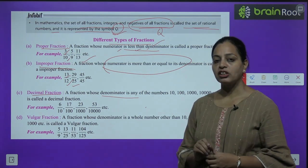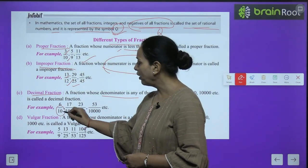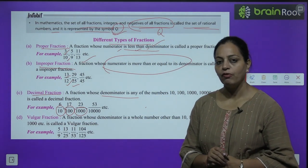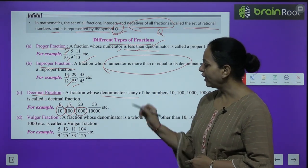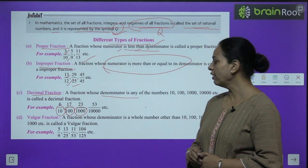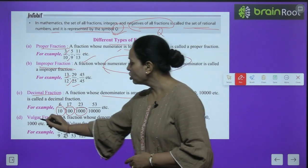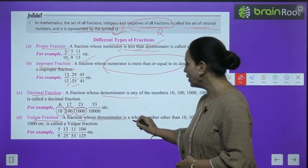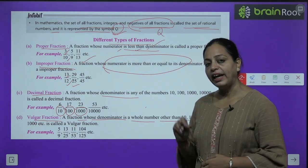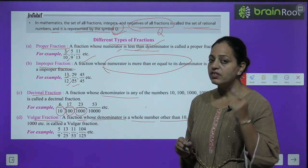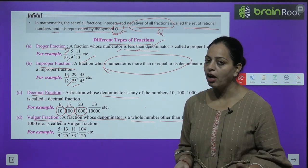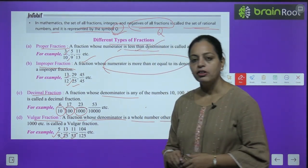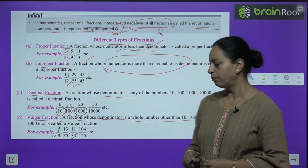Like 6/10, 17/100 — these are decimal fractions. Vulgar fraction: a fraction whose denominator is a whole number other than 10, 100, 1000, etc. For example, denominators like 9, 25, 53 — these are vulgar fractions. I hope it's clear to you; you have done these in previous classes.